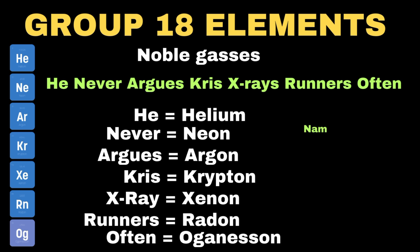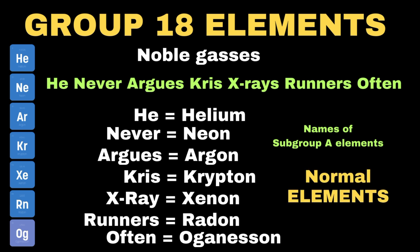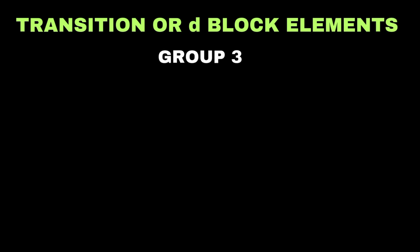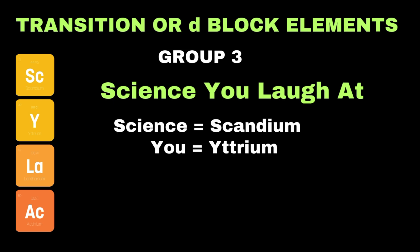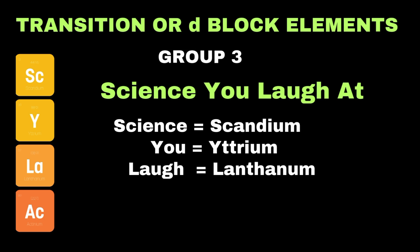Until now we have learned tricks to memorize subgroup A elements, also called normal or non-transition elements. Now it's time to learn how to memorize transition elements, also called D-block elements. Let's start with group 3. Its mnemonic is: 'Science you laugh at.' Here 'science' refers to scandium, 'you' is for yttrium, 'laugh' denotes lanthanum, and 'at' denotes actinium.